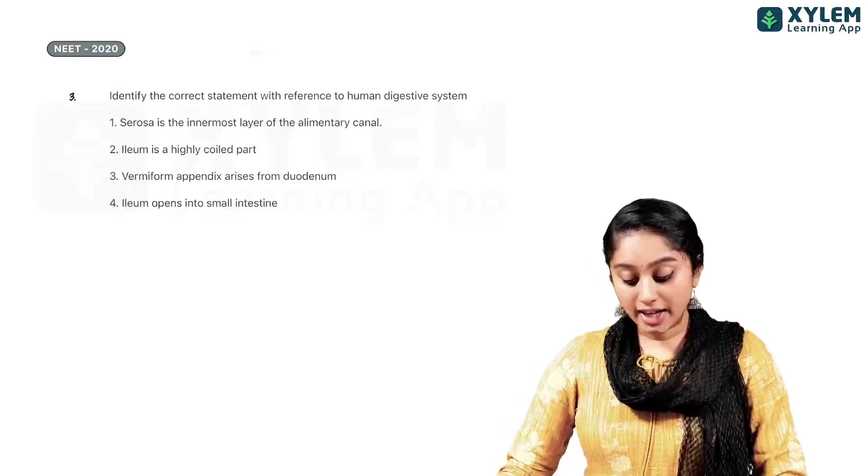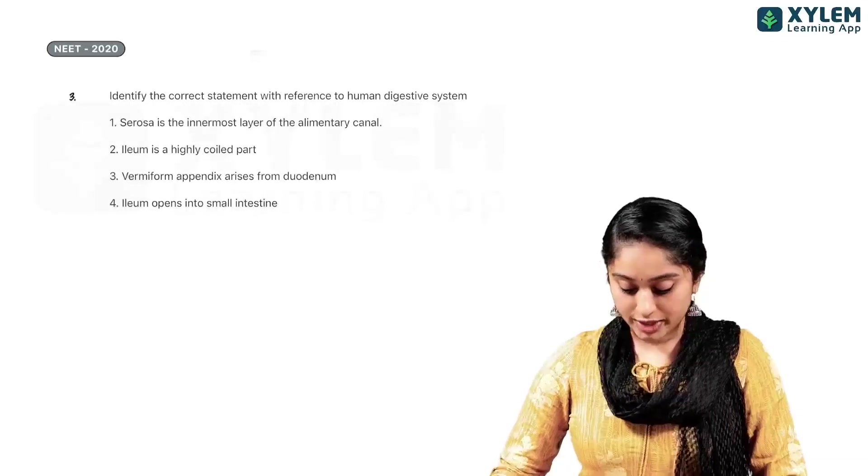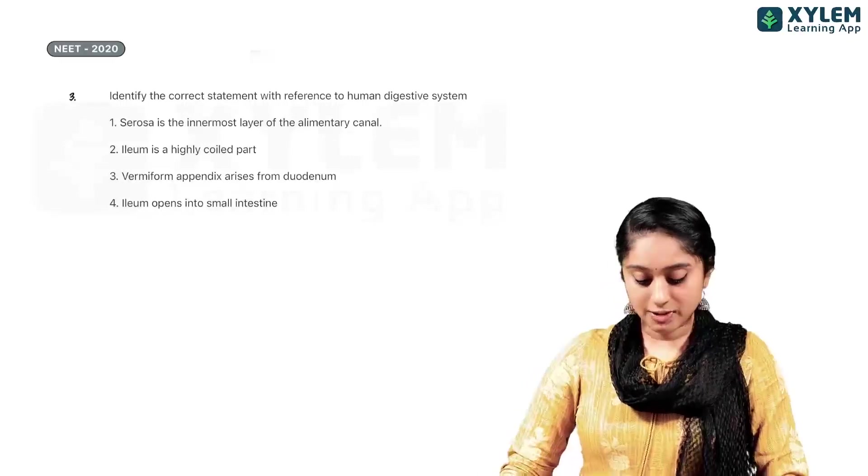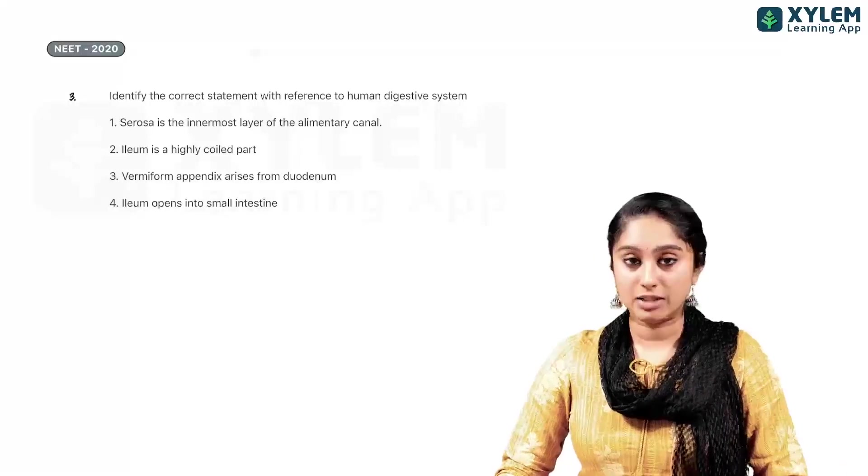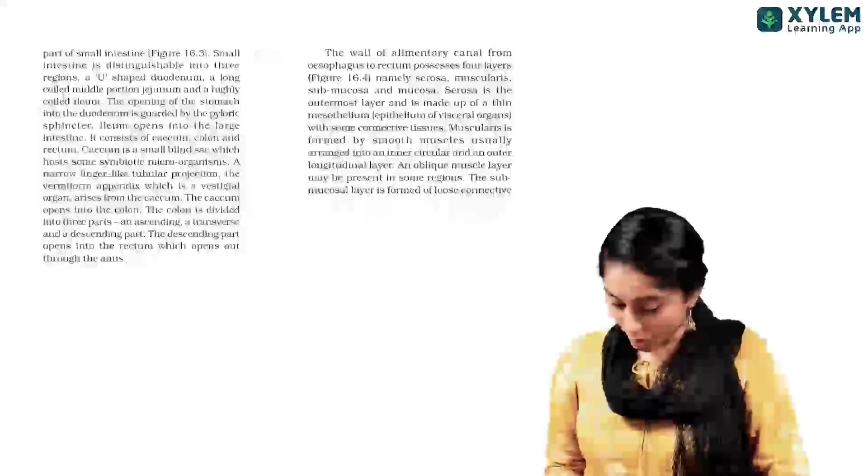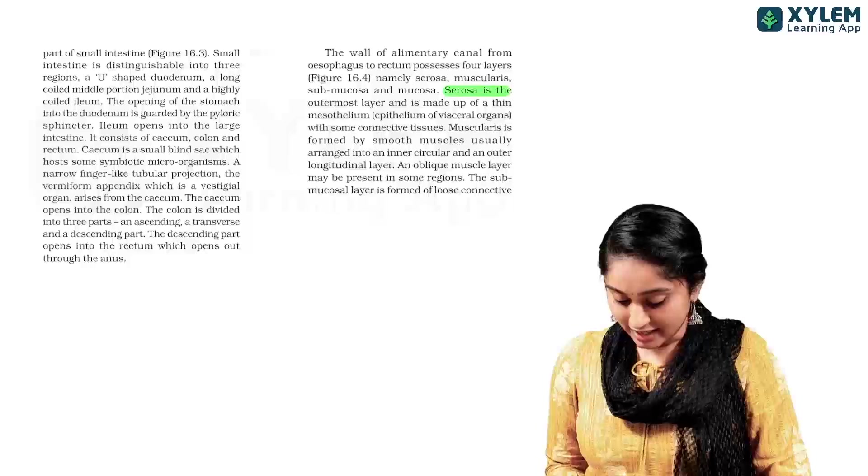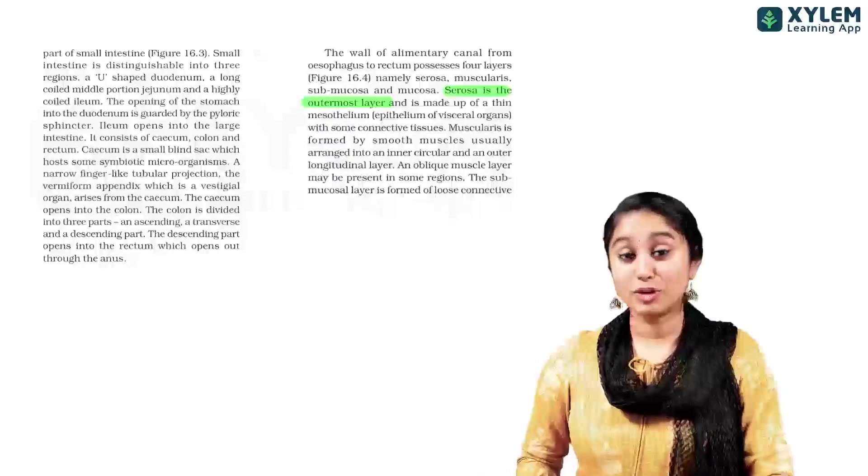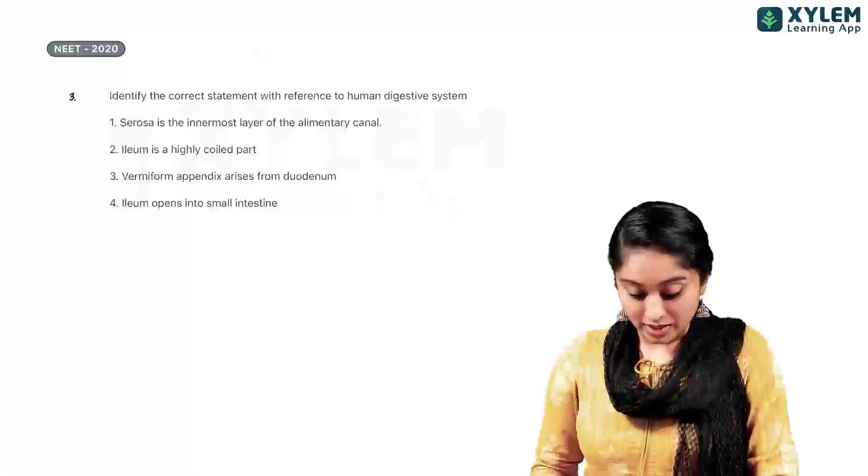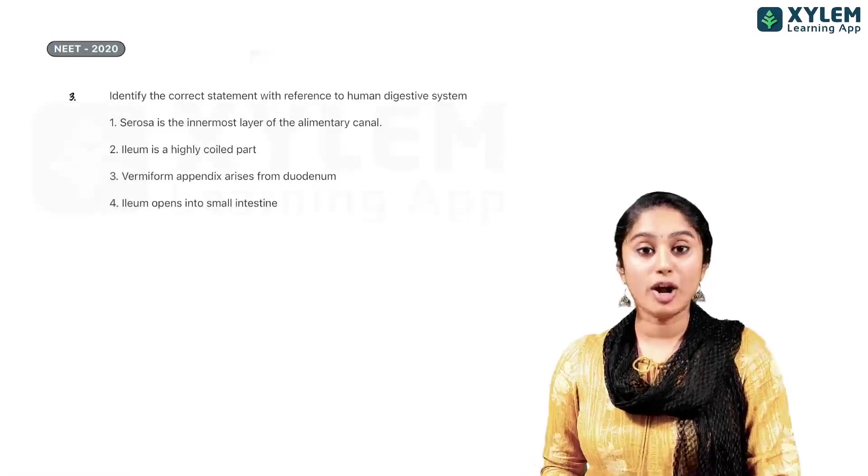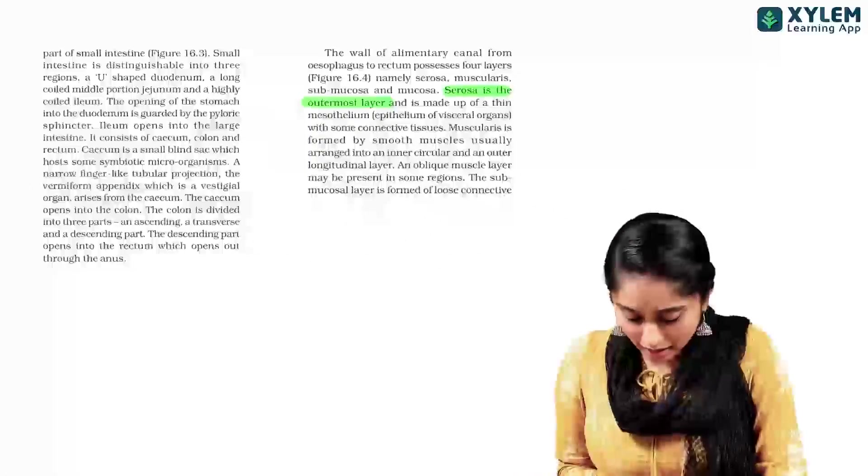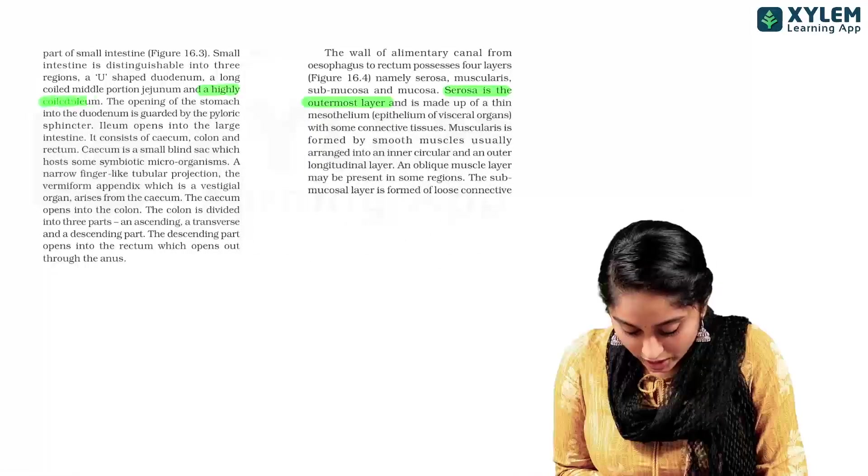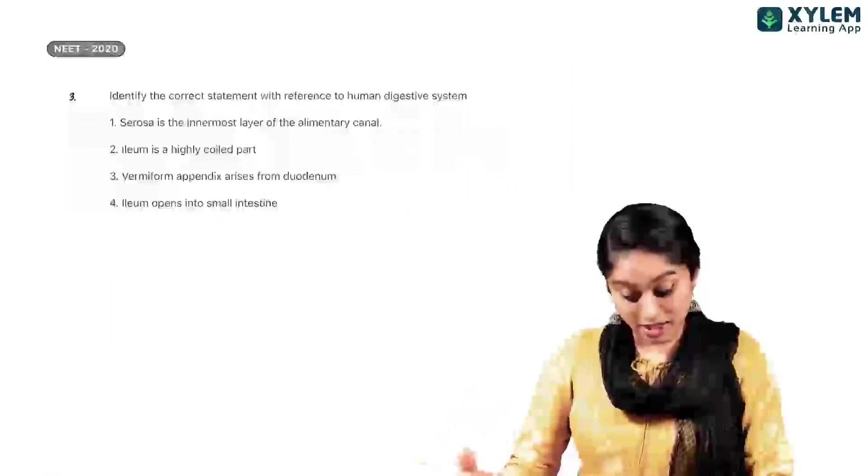Now, third question is identify the correct statement with reference to the human digestive system. So, first statement says Serosa is the innermost layer. Is it the innermost layer? No. It is the outermost layer. Clearly. And the diagram you know that Serosa is the outermost layer. Then, Ileum is a highly coiled part. That is correct. So, we have a statement here that says a highly coiled Ileum is present.